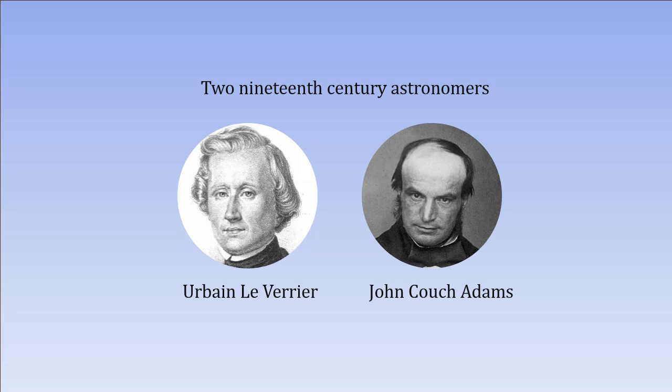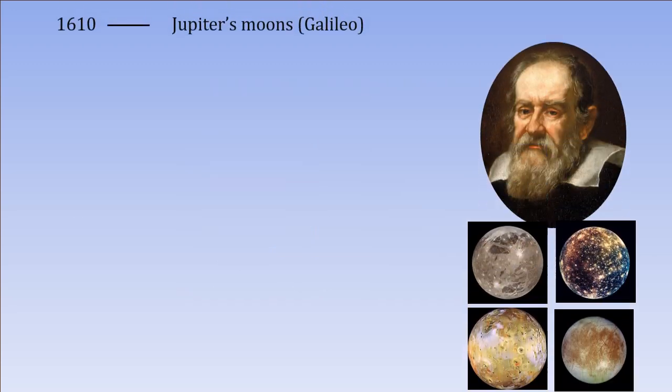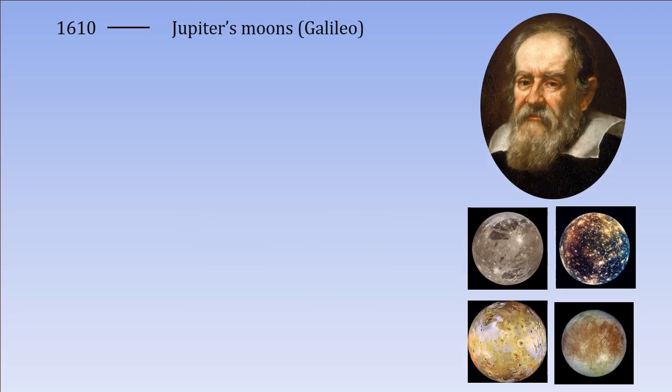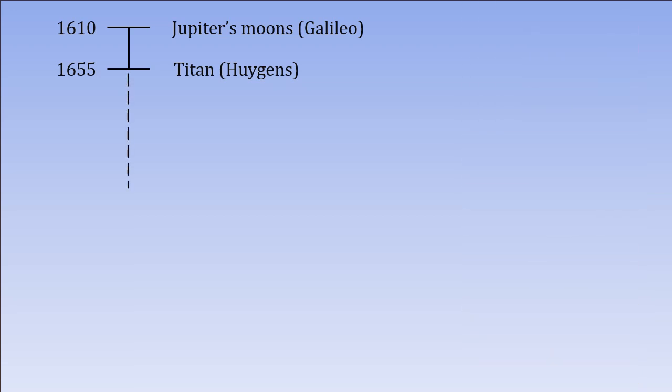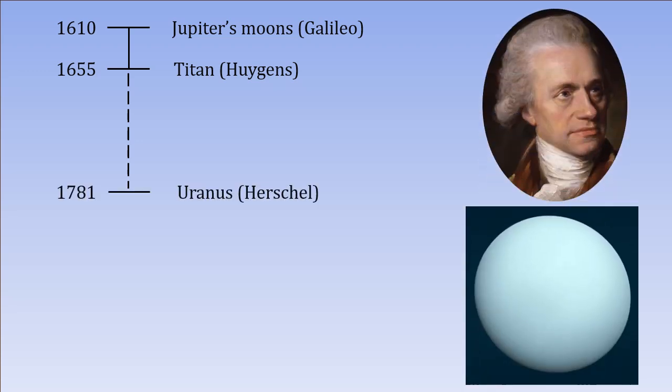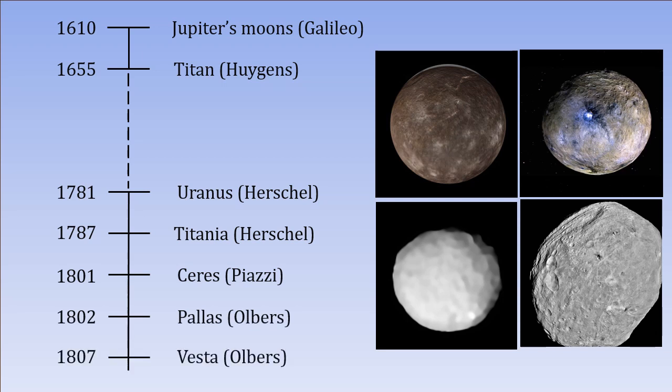Discovery of the first celestial body through telescope is credited to Galileo, who had observed the four moons of Jupiter in 1610. Few years later, Huygens discovered the largest moon of Saturn, Titan. After that, there was a long lull of about 130 years when no new significant celestial body was discovered. It all changed in 1781, when German astronomer William Herschel discovered Uranus. That discovery opened the floodgates, and a bunch of new moons and asteroid-belt objects were discovered soon after.